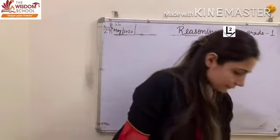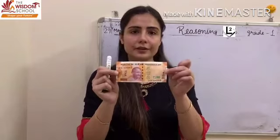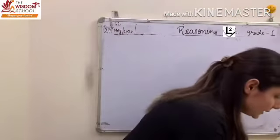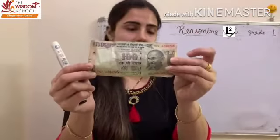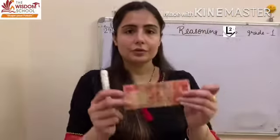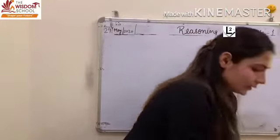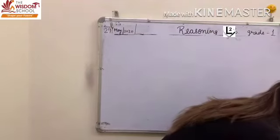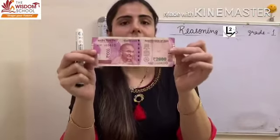So children, firstly we will begin with the notes. This is the 200 rupee note. Next, this will be the 100 rupee note. One by one, I am going to show you the Indian currency in the form of notes. Similarly, this is the 2000 rupee note.